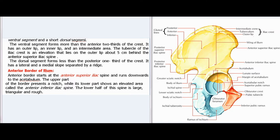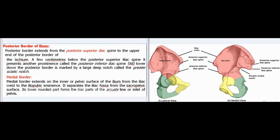The anterior border of the ilium starts at the anterior superior iliac spine and runs downwards to the acetabulum. The upper part presents a notch while the lower part shows an elevated area called the anterior inferior iliac spine; its lower half is large, triangular, and rough. The posterior border extends from the posterior superior iliac spine to the upper end of the posterior border of the ischium. A few centimeters below the posterior superior iliac spine is the posterior inferior iliac spine. Further below, the posterior border is marked by a large deep notch called the greater sciatic notch. The medial border extends on the inner or pelvic surface from the iliac crest to the iliopubic eminence.